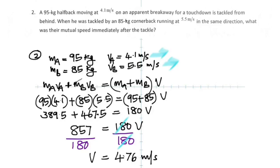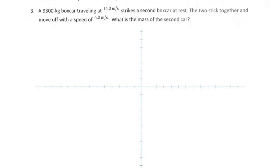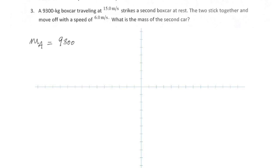That takes us to the third problem. In this problem, you have a 9,300-kilogram box car traveling at 15 meters per second, striking a second one which is at rest. The two stick together and move off with a speed of 6 meters per second. What is the mass of the second car? This is similar to the previous problem, except that you have to find the mass of the second car.